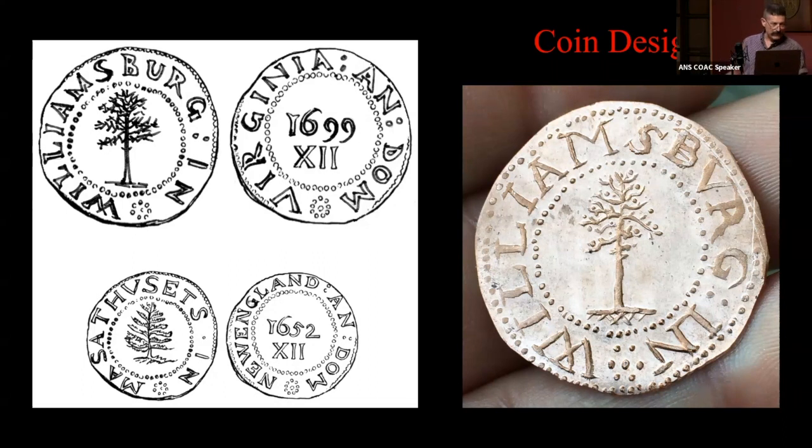Instead of a very New England pine tree, we went with a southern loblolly because these don't grow in New England. We're coming up with a coin design that is using the same vocabulary of the Massachusetts Bay Mint, but we're substituting something that's distinctive to Williamsburg and Virginia.